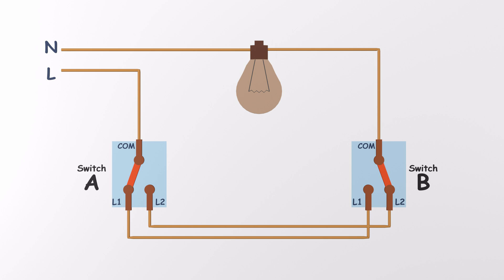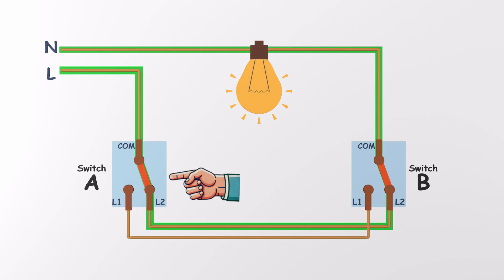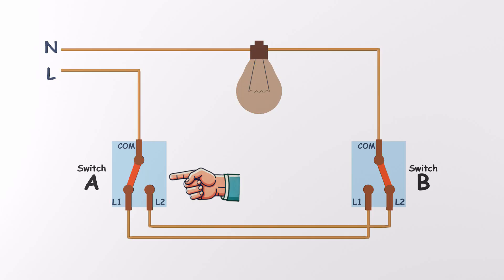So, what's actually happening? When both switches are in the same position, either both up or both down, the circuit is complete, and the light turns on. If one switch is flipped while the other stays put, the circuit breaks, and the light goes off.